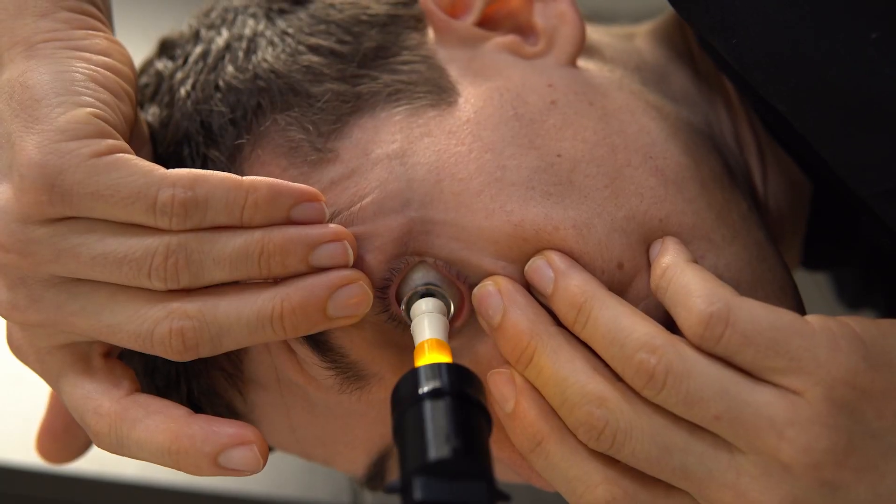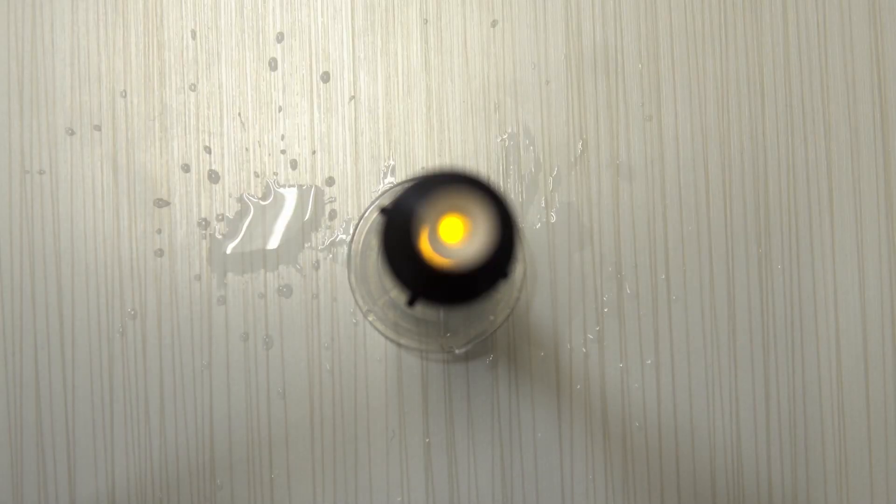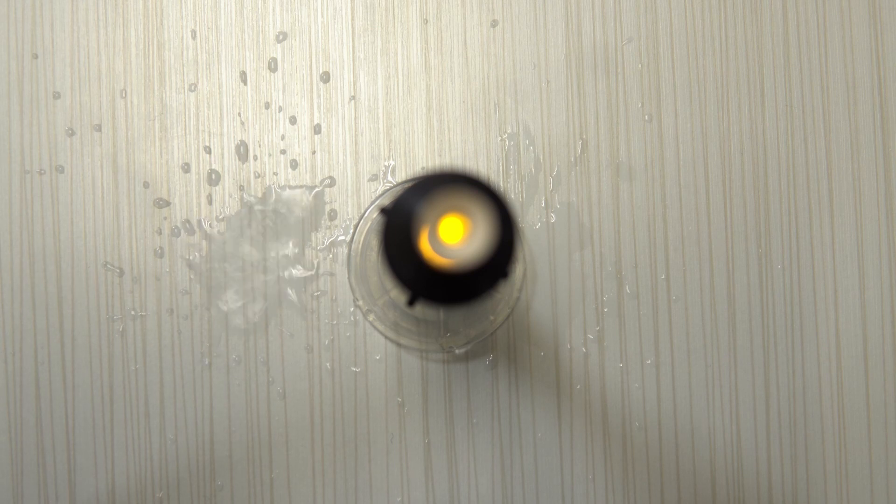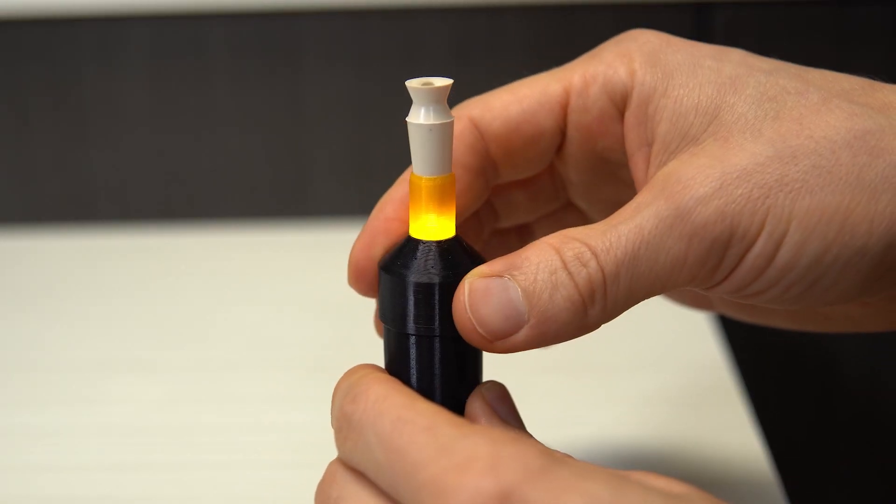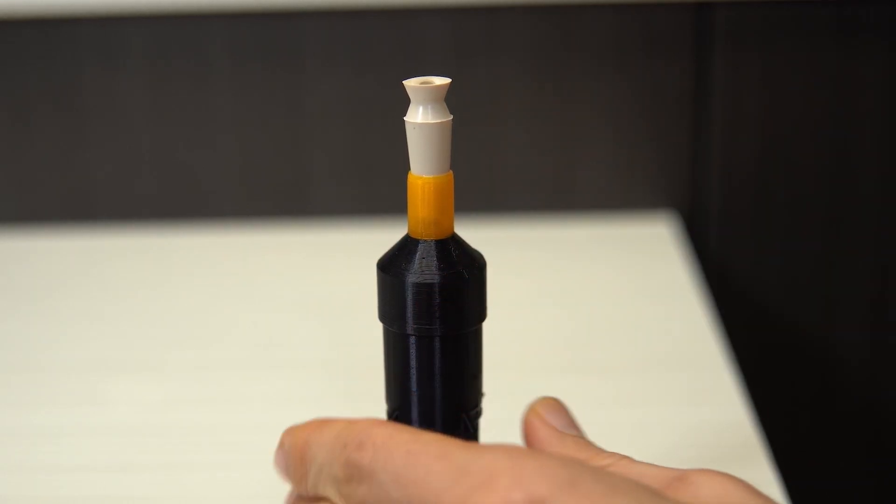The excess saline solution will typically spill out of the lens bowl when your eye makes contact with the lens. Step five: twist the top half of the light unit clockwise to turn off the light.